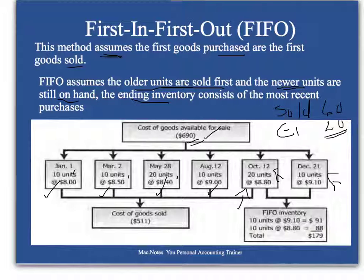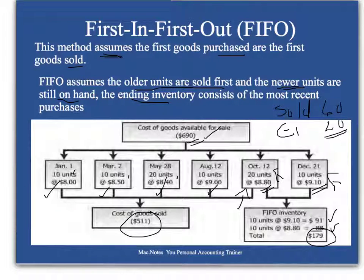So the value: the 10 units at $9.10 equals $91, and 10 at $8.80 equals $88 — that's the value of the ending inventory. The cost of goods sold is $511, and the ending inventory is $179.